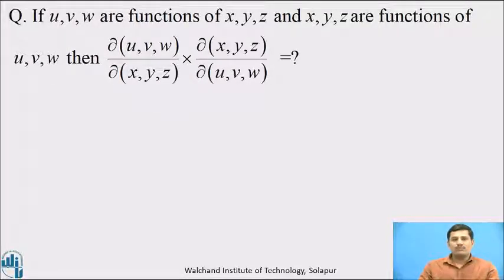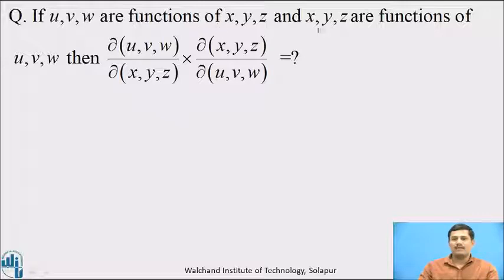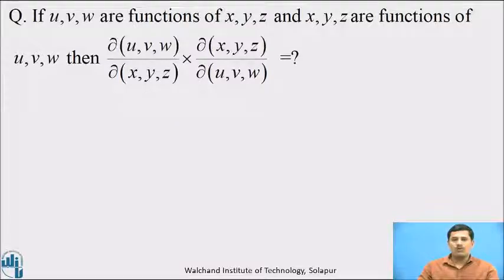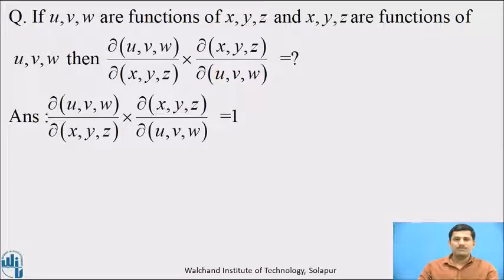Pause this video and answer this question: if U, V, W are functions of X, Y, Z and X, Y, Z are functions of U, V, W, then what is the value of the product of these two Jacobians? I hope all of you have written the answer. By property number 1, the value of J into J dash equals 1.